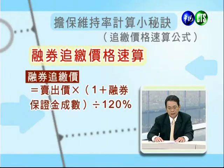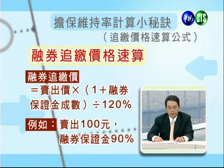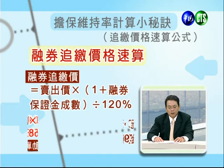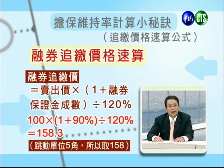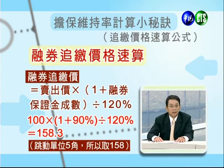徐老师说明：听到追缴这两个字比被拒绝追女朋友的电话还恐怖，同学要更加小心控管自己的风险。融券追缴的公式：融券追缴价款等于卖出价乘以（一加融券保证金乘数）除以120%。举例：卖出时是100块，融券保证金是90%，试算公式就是100乘以（1+90%）除以120%，所得价款是158.3，即158块。股票若涨到158块就会产生追缴。